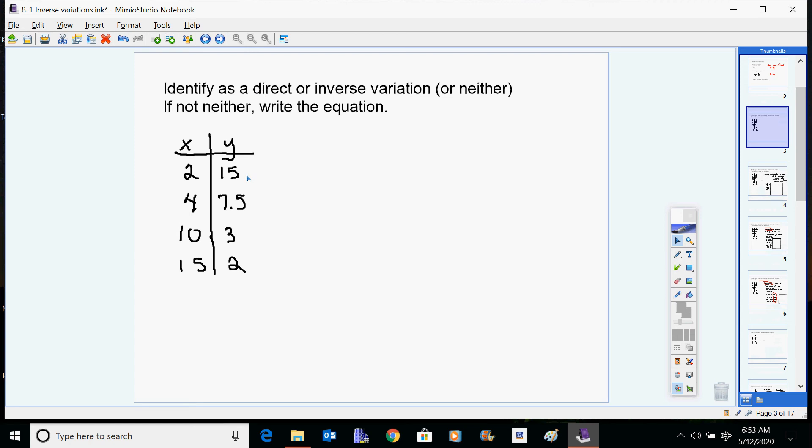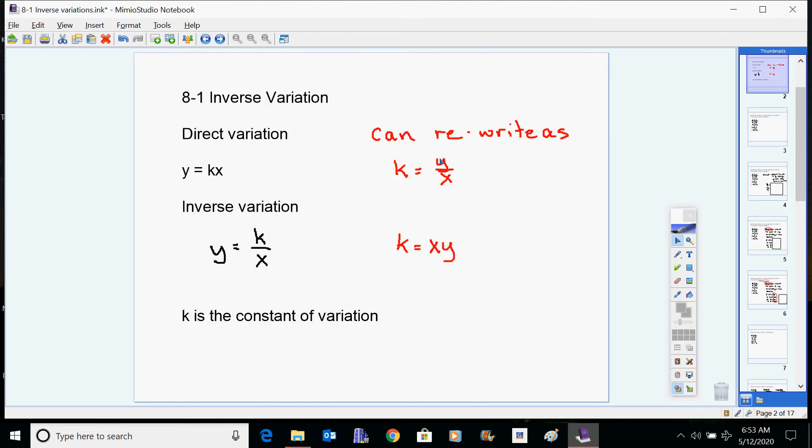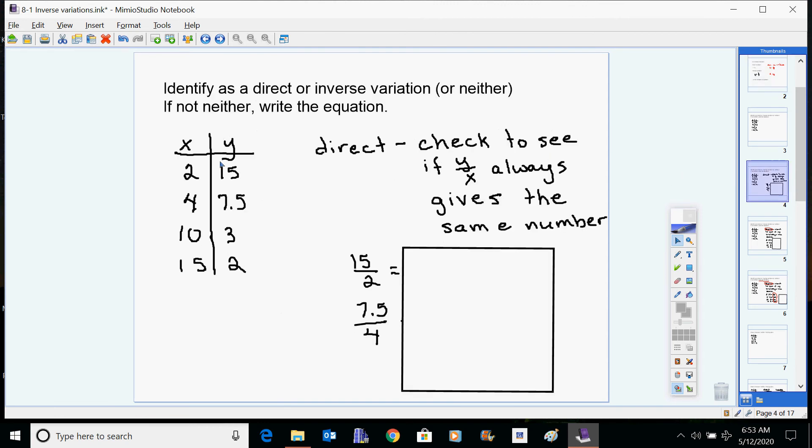In order to find out if it's a direct variation, you're always looking to see what you get when you divide y divided by x. See if you find the same number each time. So we're going to check y over x. The first one we check 15 over 2 gives us 7.5. Now if it's a direct variation, every one of these division problems should give us the same answer. When I look at 7.5 divided by 4, I'm not getting 7.5. I'm not even really necessarily interested in the number except for the fact that it doesn't come out to be the same.